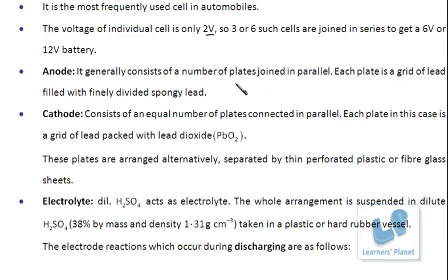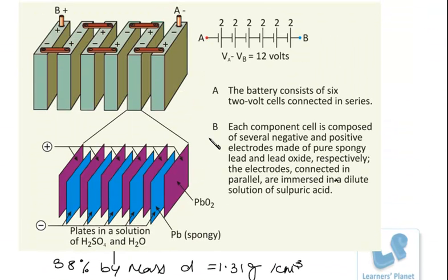The anode generally consists of a number of plates joined in parallel. Each plate is a grid of lead filled with finely divided spongy lead. The cathode consists of an equal number of plates connected in parallel, and each plate is a grid of lead packed with lead oxide. So the cathode is a grid of lead filled with lead oxide, and the anode is a grid of lead filled with spongy lead. These are not very thin single plates — they are stacks of plates connected in parallel.